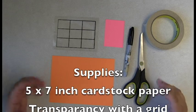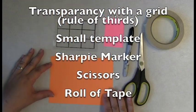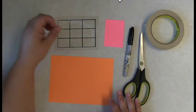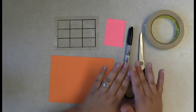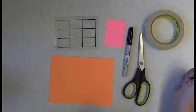OK, so when making a viewfinder, here are the supplies that you're going to need. One 5x7 sheet of cardstock paper, a grid with a rule of thirds, a small template, sharpie marker, scissors, and a roll of tape. Let's get started.